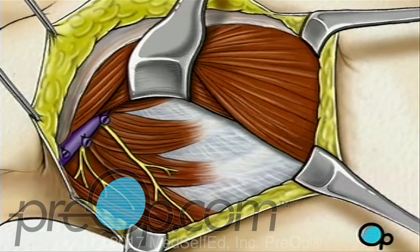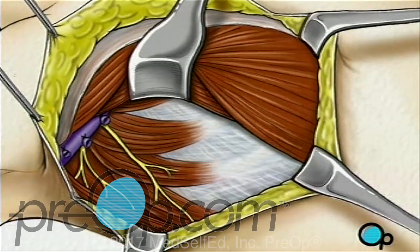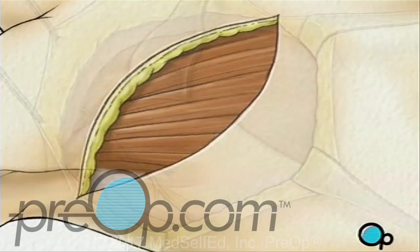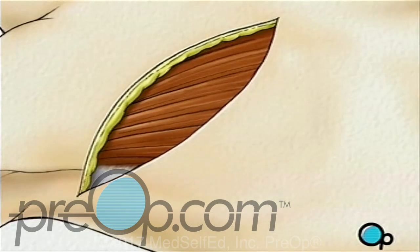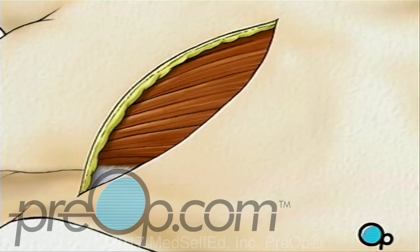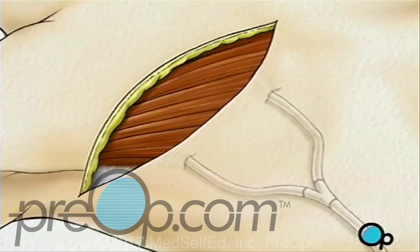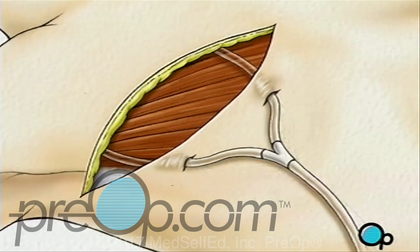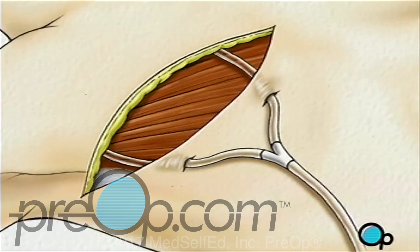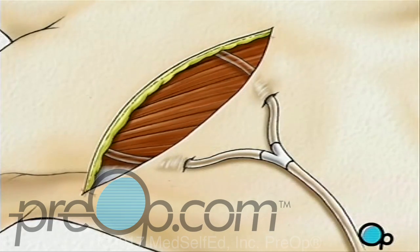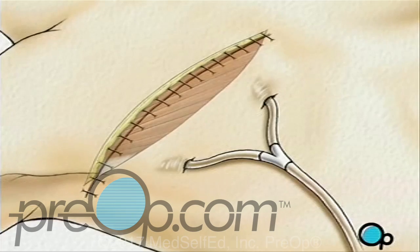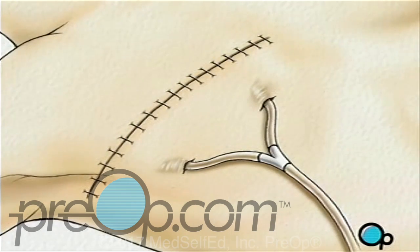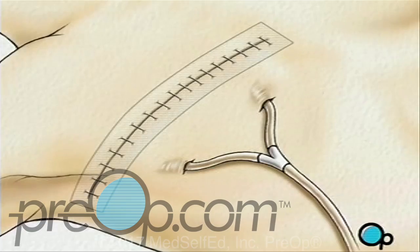When the surgical team is satisfied that they have done all that they can do to remove the cancer, they will release the muscles and other tissue. One or more drainage tubes will be temporarily inserted at the site while the healing process begins. They will then close the incision. Finally, a sterile bandage is applied.